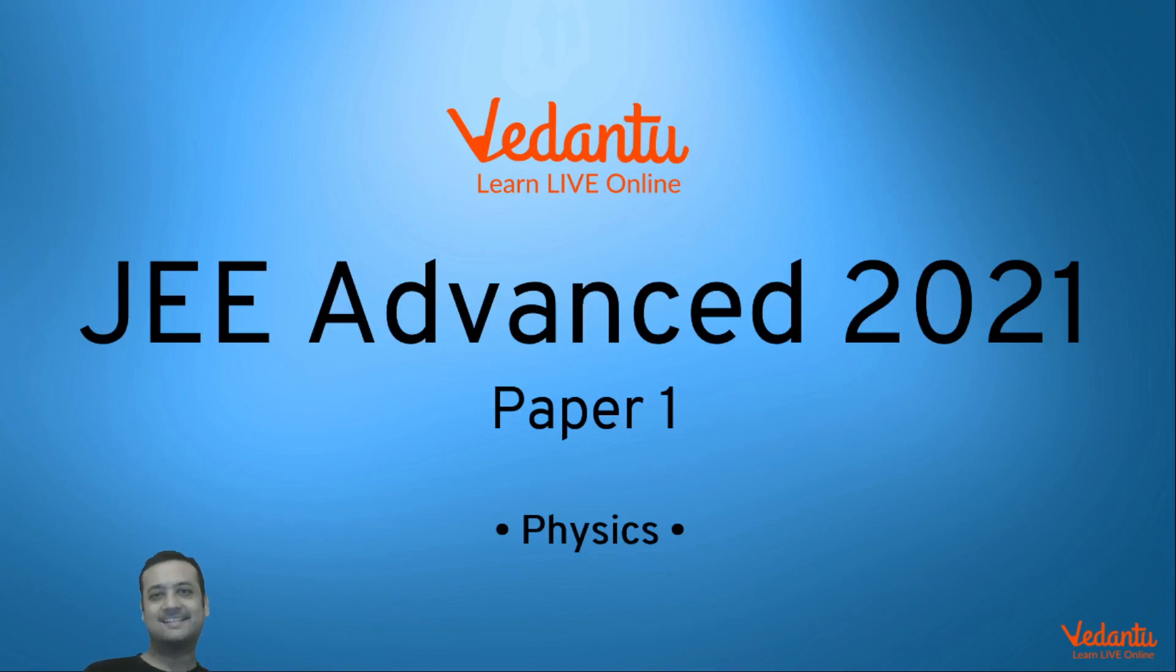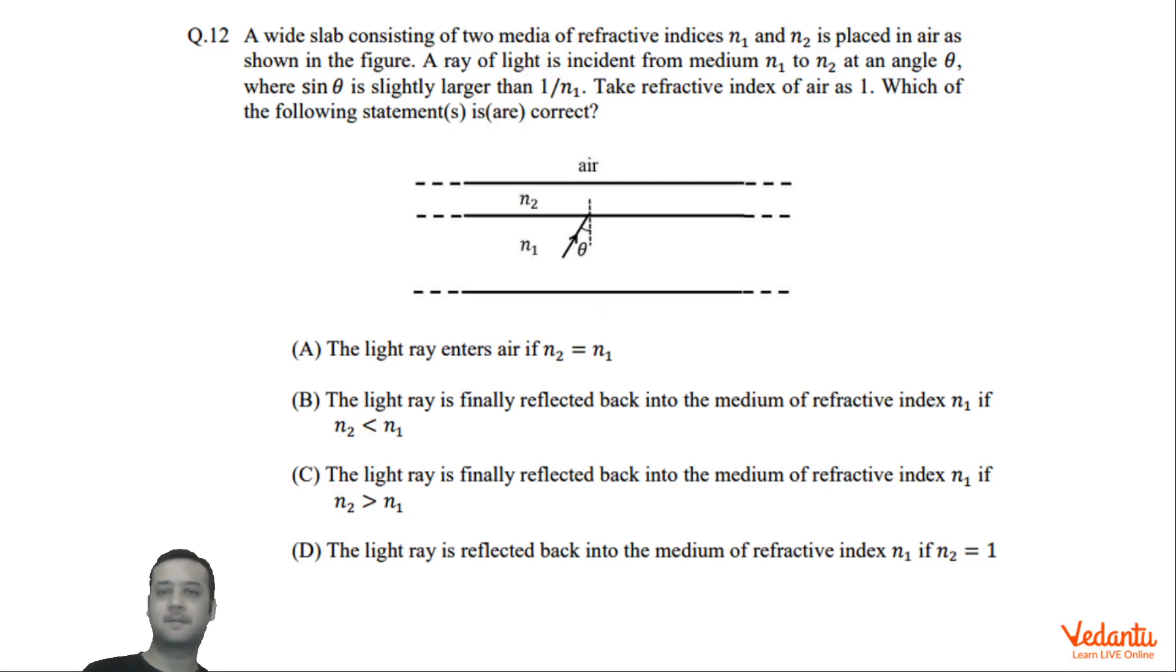Hi dear students. Let's see this question that came in JEE Advanced Paper 1, Physics, in the year 2021. The question is from the topic of optics, more specifically TIR.